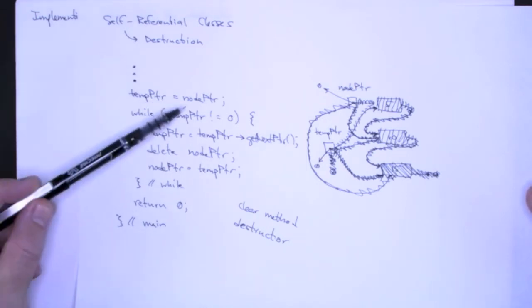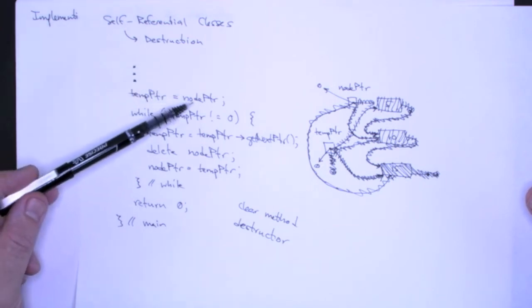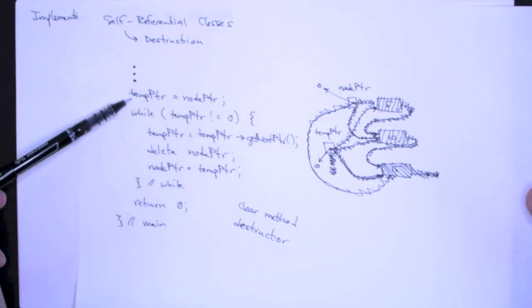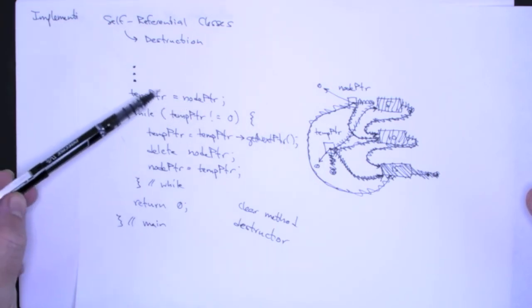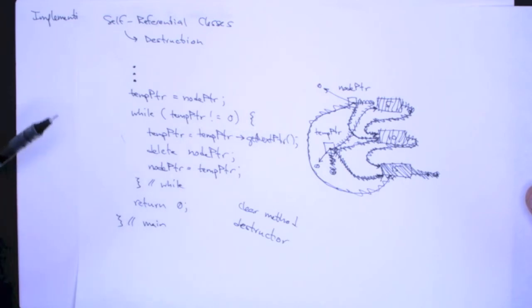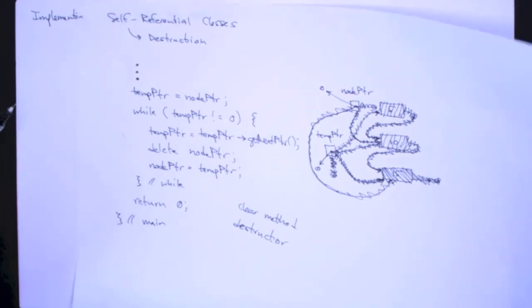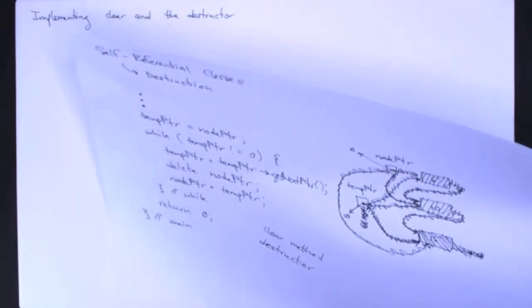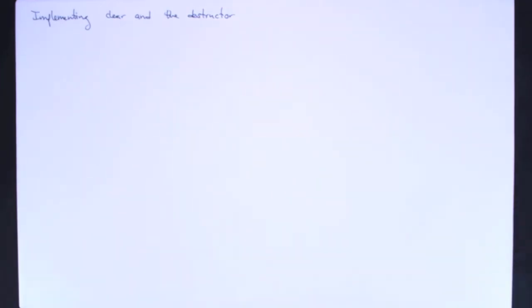Now the names are going to change here. Instead of using node pointer, I'm going to use head pointer, it's going to be the private data member of the class. Then I'm going to have to actually declare temp pointer myself, but for all intents and purposes, this is the implementation that I need.